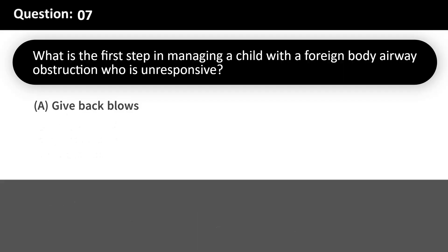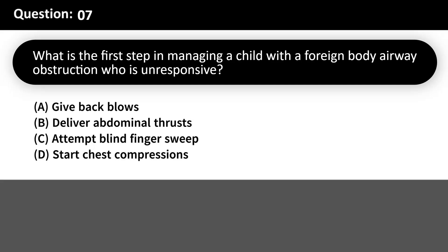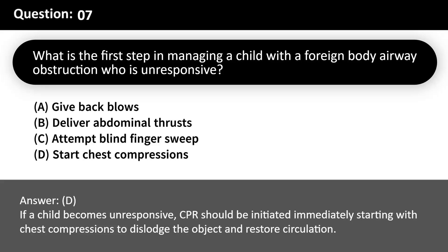What is the first step in managing a child with a foreign body airway obstruction who is unresponsive? A. Give back blows. B. Deliver abdominal thrusts. C. Attempt blind finger sweep. D. Start chest compressions. Answer: D. If a child becomes unresponsive, CPR should be initiated immediately starting with chest compressions to dislodge the object and restore circulation.